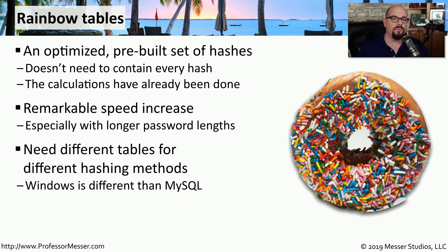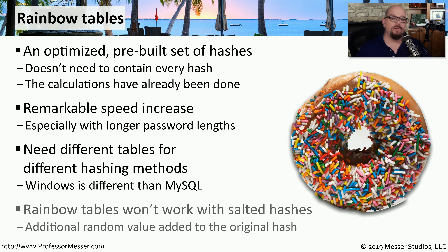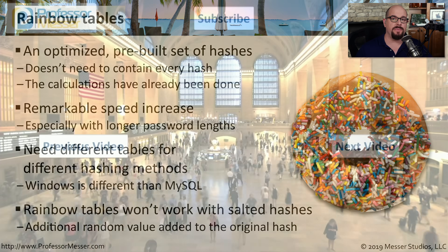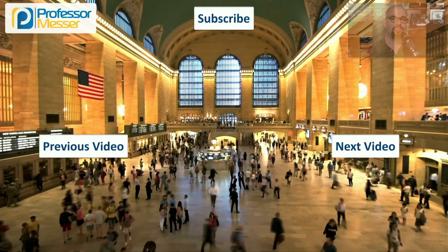For the best possible security, we store our hashed passwords with additional random information called a salt. A salted hash adds randomization to the value that's stored in the password table, which means that precalculated rainbow tables can't be used if a salt is being used with the password.